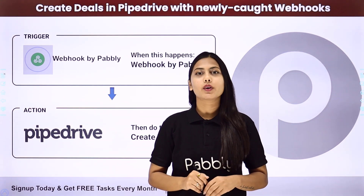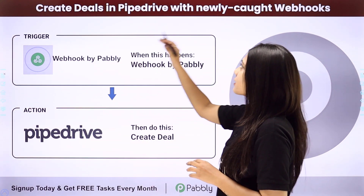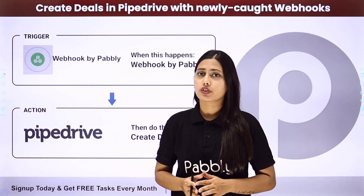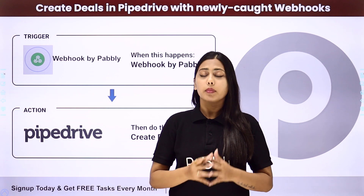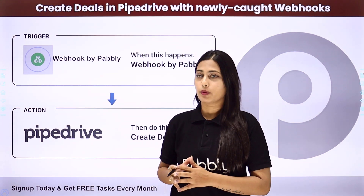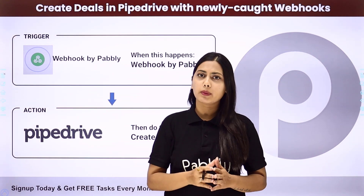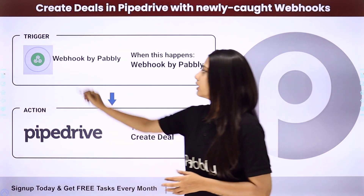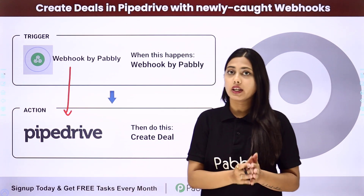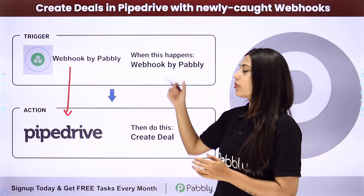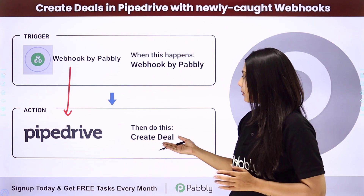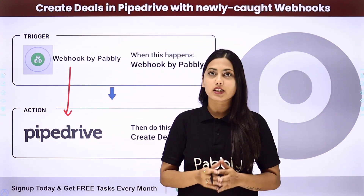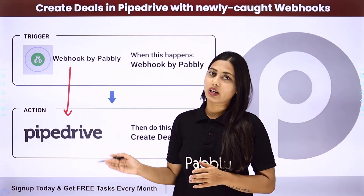Hello everyone. In this video we are going to learn how to create deals in Pipedrive with newly caught webhooks. There are certain applications for which you cannot find a trigger in Pabbly Connect, but they can be integrated using webhook. We are going to use webhook by Pabbly to retrieve information from that specific application, and then integrate these two applications so that whenever we receive information from the webhook, a deal will be created in Pipedrive. We will create this automation with the help of Pabbly Connect where our trigger will be webhook and our action will be Pipedrive.